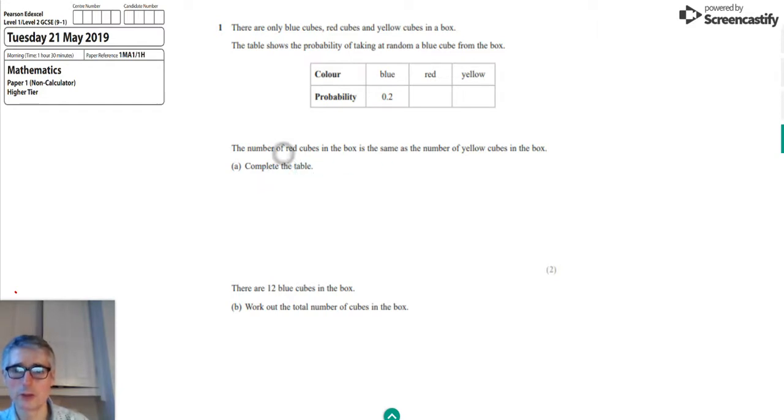So we're told that the number of red cubes in the box is the same as the number of yellow cubes that's in the box. What that means is the probability of getting a red is going to be equal to the probability of getting a yellow. So I'm going to call that X and X and fill it into that table like that.